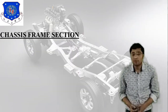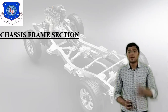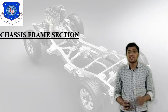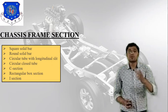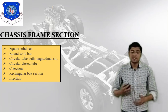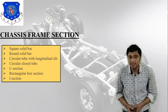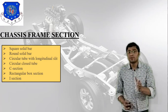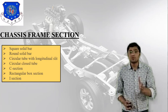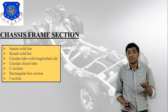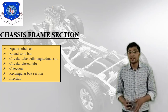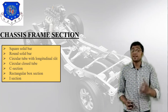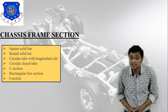The classification of chassis frame sections is based on two parameters: bending distortion and torsional distortion, giving us seven or eight different types. From the table, according to passenger capacity and vehicle size, the sections are: square solid bar, round solid bar, circular tube with longitudinal split, circular closed tube, C section or T section, rectangular box section, and I section.